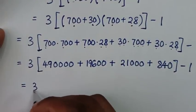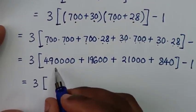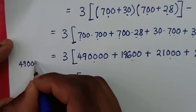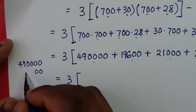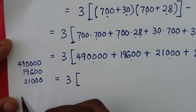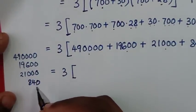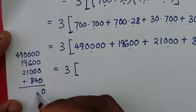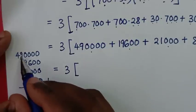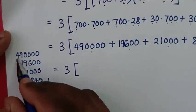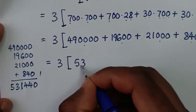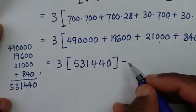Then it will be equal to 3, bracket. We find the sum of all these in long method: 490,000 plus 19,600 plus 21,000 plus 840. Adding: units give 0, tens give 4, hundreds: 6 plus 8 is 14, carry 1; thousands: 9 plus 1 is 10 plus 1 is 11, carry 1; ten-thousands: 10 plus 2 plus 1 is 13; hundred-thousands: 4 plus 1 is 5. So the sum inside the bracket is 531,440.